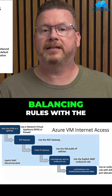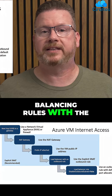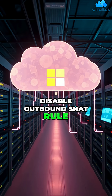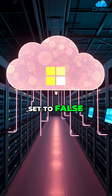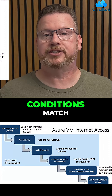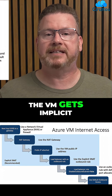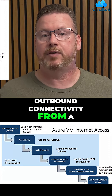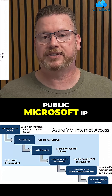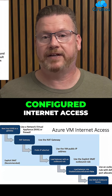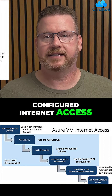After that, if there are load balancing rules with the disable outbound SNAT rule set to false, that's used. If none of those conditions match, the VM gets implicit outbound connectivity from a public Microsoft IP, even if we haven't configured internet access.